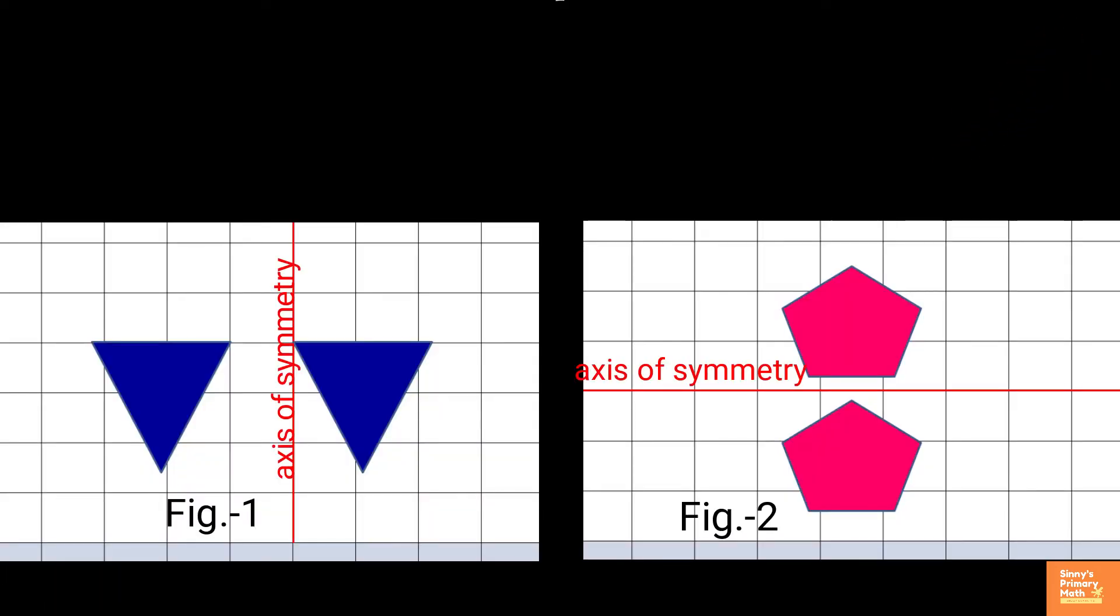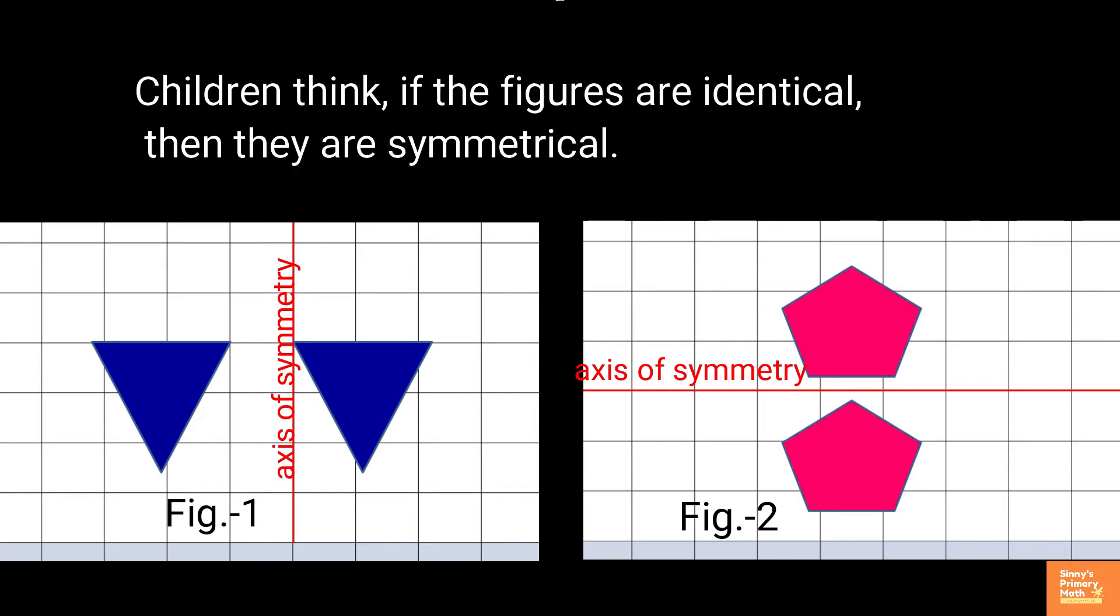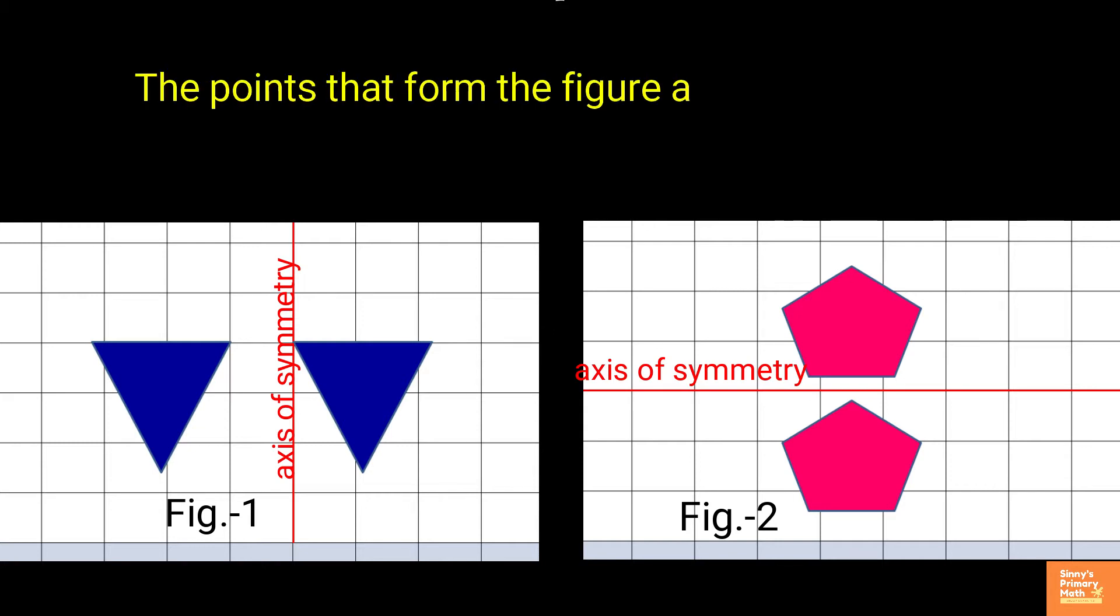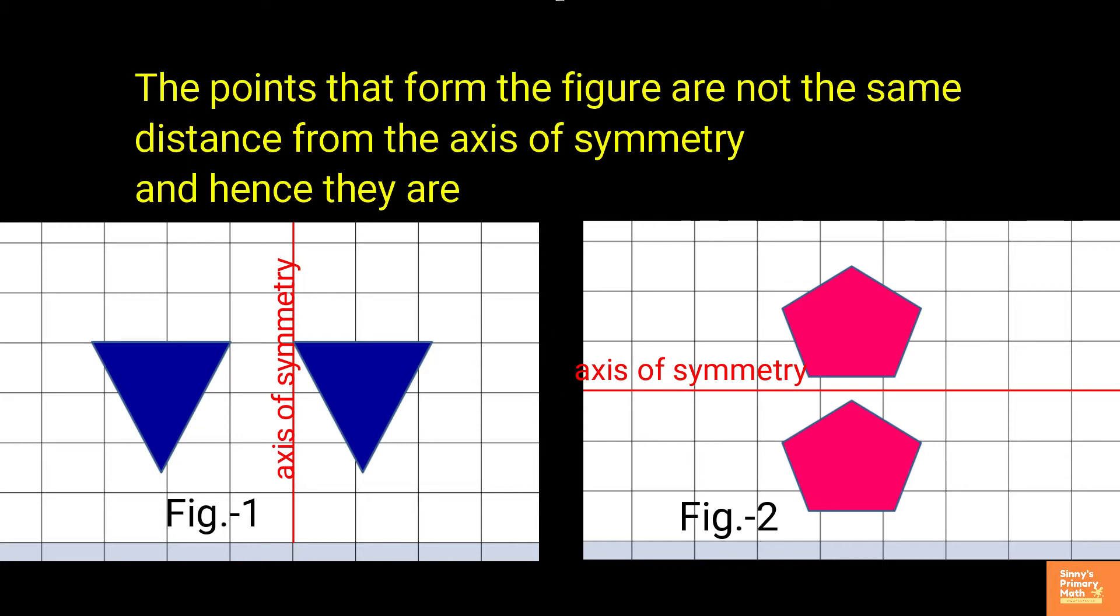Look at the figures shown. Are these two figures symmetrical with respect to the axis? Children think, if the figures are identical, then they are symmetrical. In fact, the points that form the figure are not the same distance from the axis of symmetry and hence they are not symmetrical.